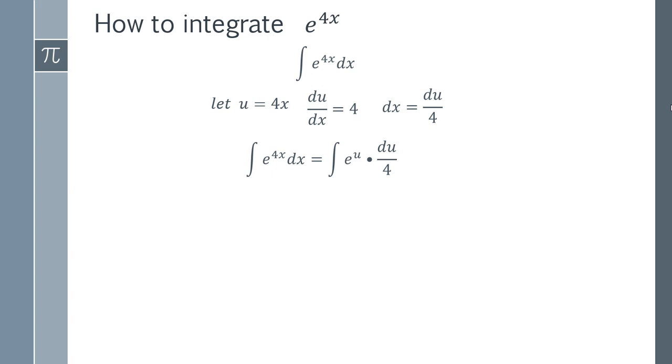We've also got this 4 on the bottom, and that can actually be taken out of the integration. So we can take out a factor of a quarter. And that gives us a nice, simple integration. The integral of e to the u is simply e to the u plus your constant. So we end up with the answer of that.